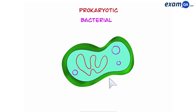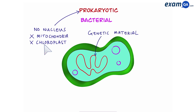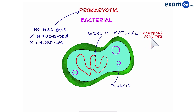Let's look at the bacterial cell now. A bacteria does not have a nucleus, which is why it's referred to as a prokaryotic cell. Nor does it have any mitochondria or chloroplasts. So its genetic material is floating freely in the cytoplasm — remember, this controls the activities of the cell. This little circle is called a plasmid. Plasmids give bacteria special characteristics such as antibiotic resistance.